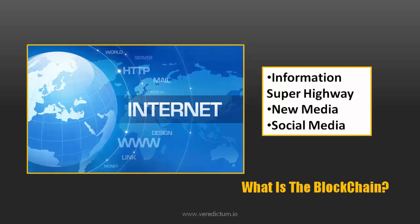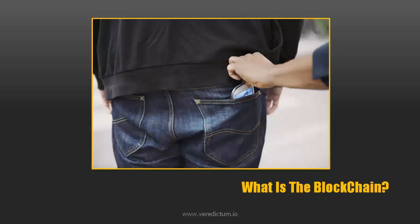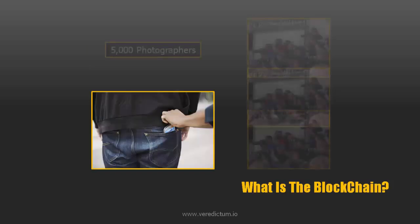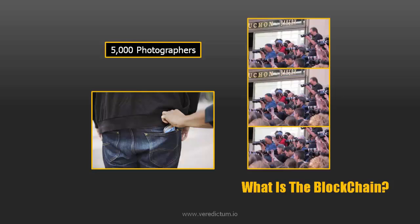So let's try and simplify the complexity of blockchain by example. Let's say I steal your smartphone. To establish the truth, you and I would normally go to court. There would be a process of law and it would be your word against mine. But let's say there were 5,000 photographers that took a snapshot of me stealing your phone. It's now pretty hard for me to disprove that I stole your phone.